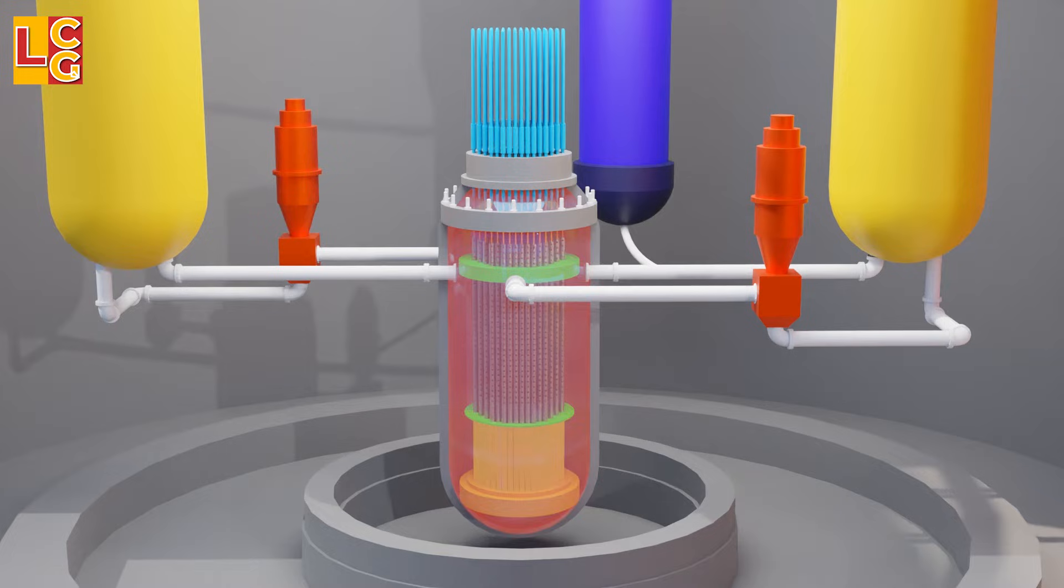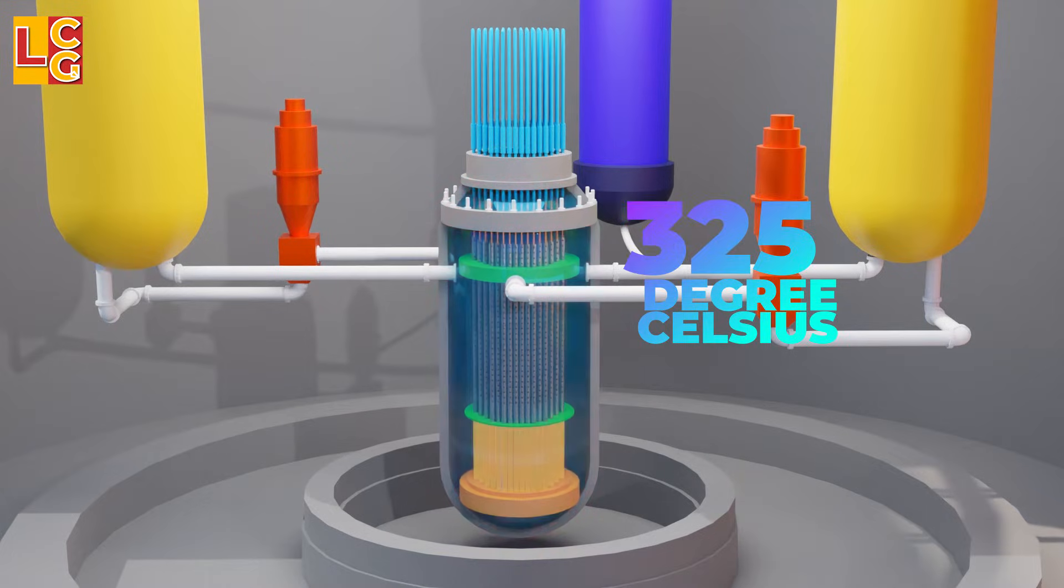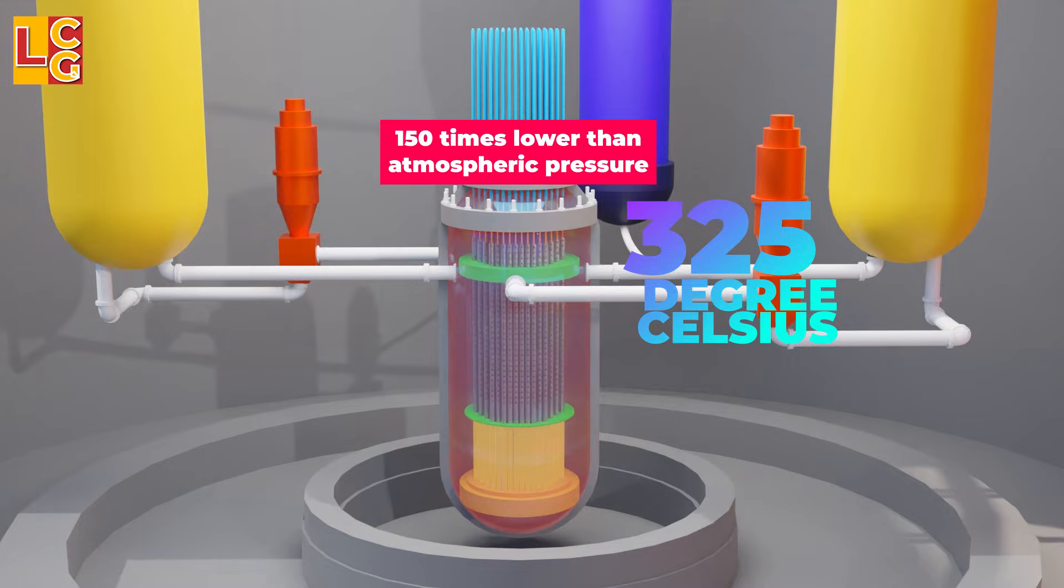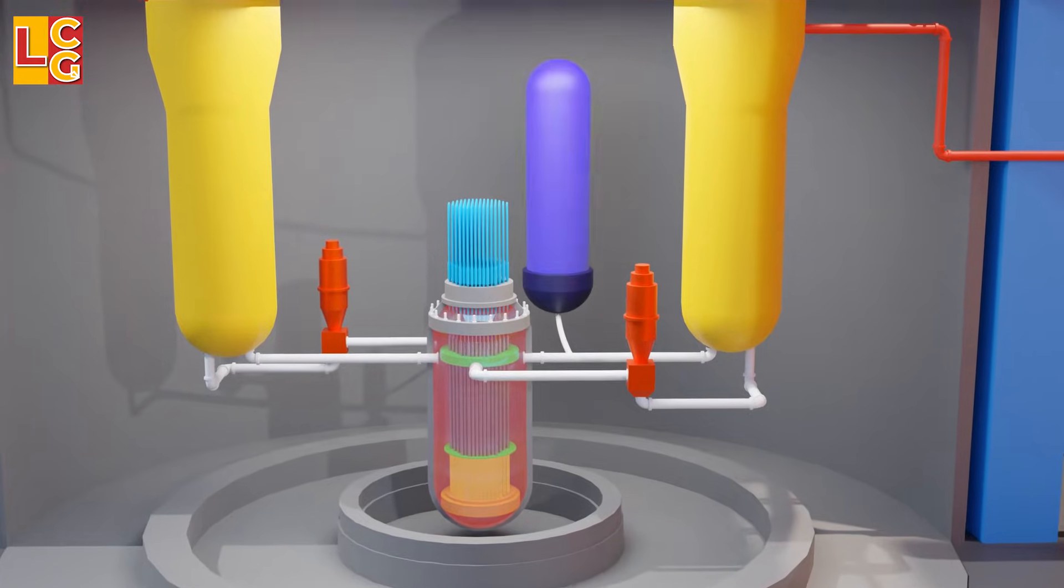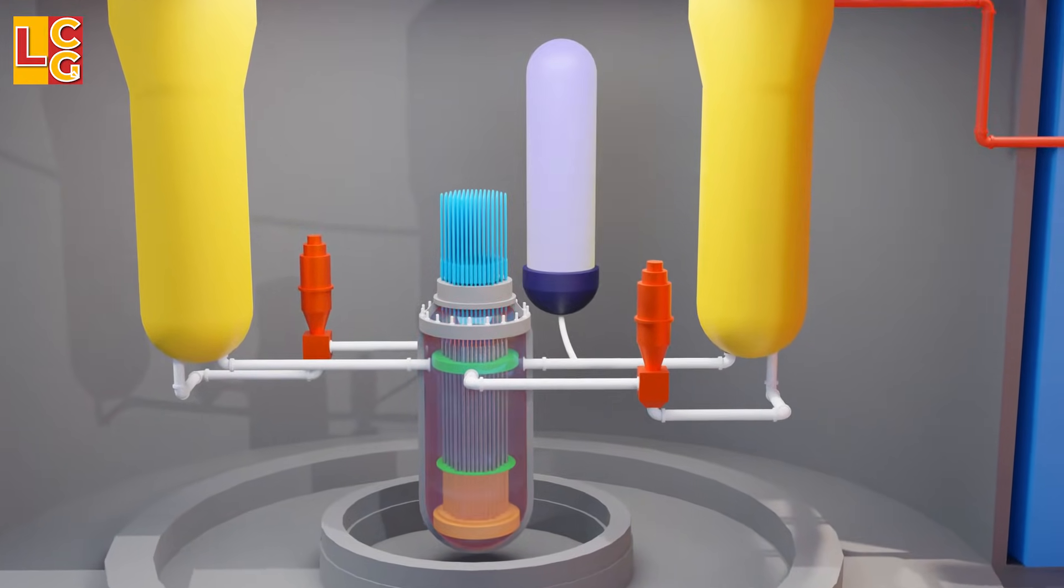This water can heat up to 325 degrees Celsius, so it must be kept under 150 times the atmospheric pressure in order to avoid boiling it. That's the job of the pressurizer, to prevent the water inside the reactor vessel from boiling.